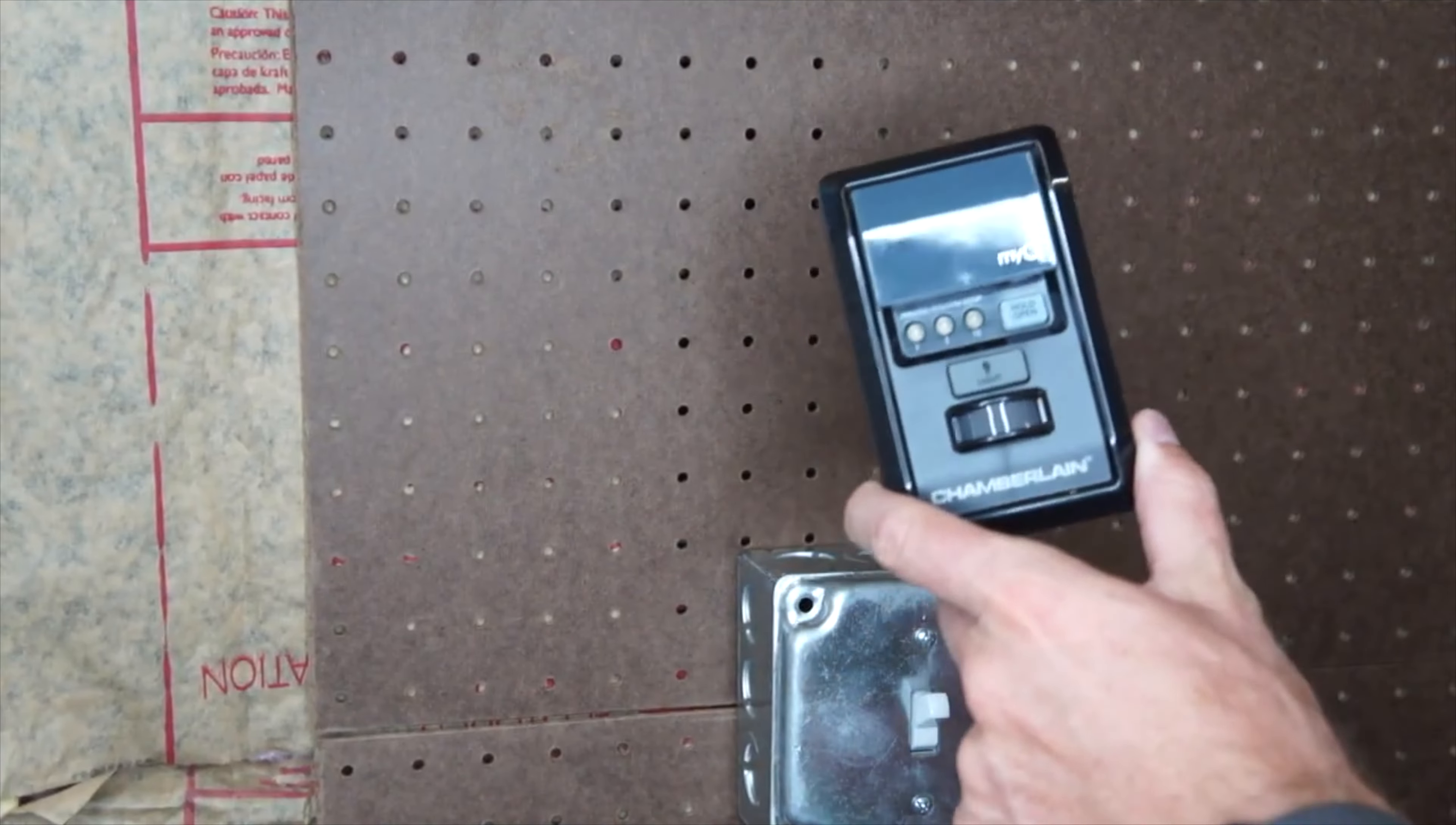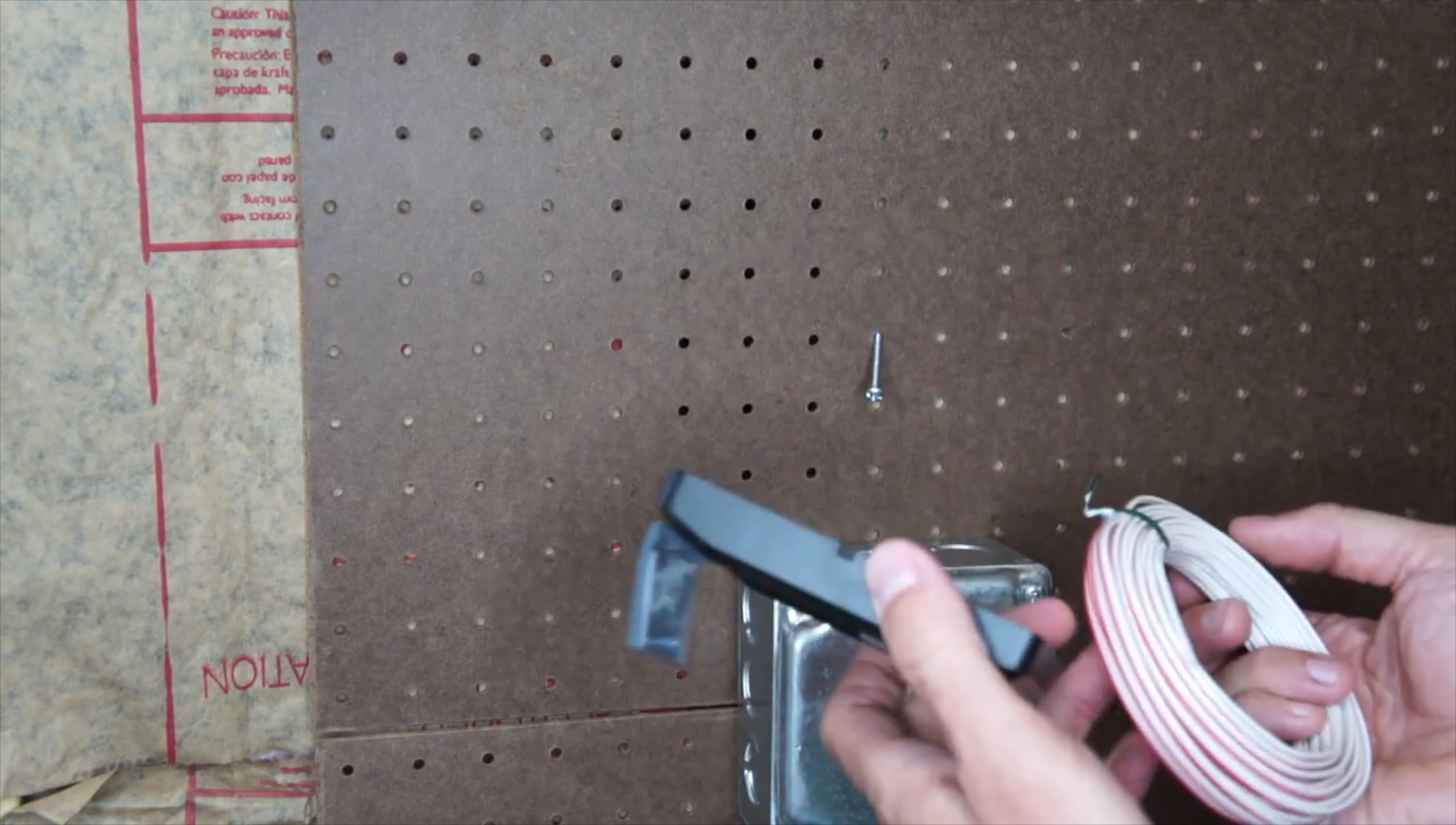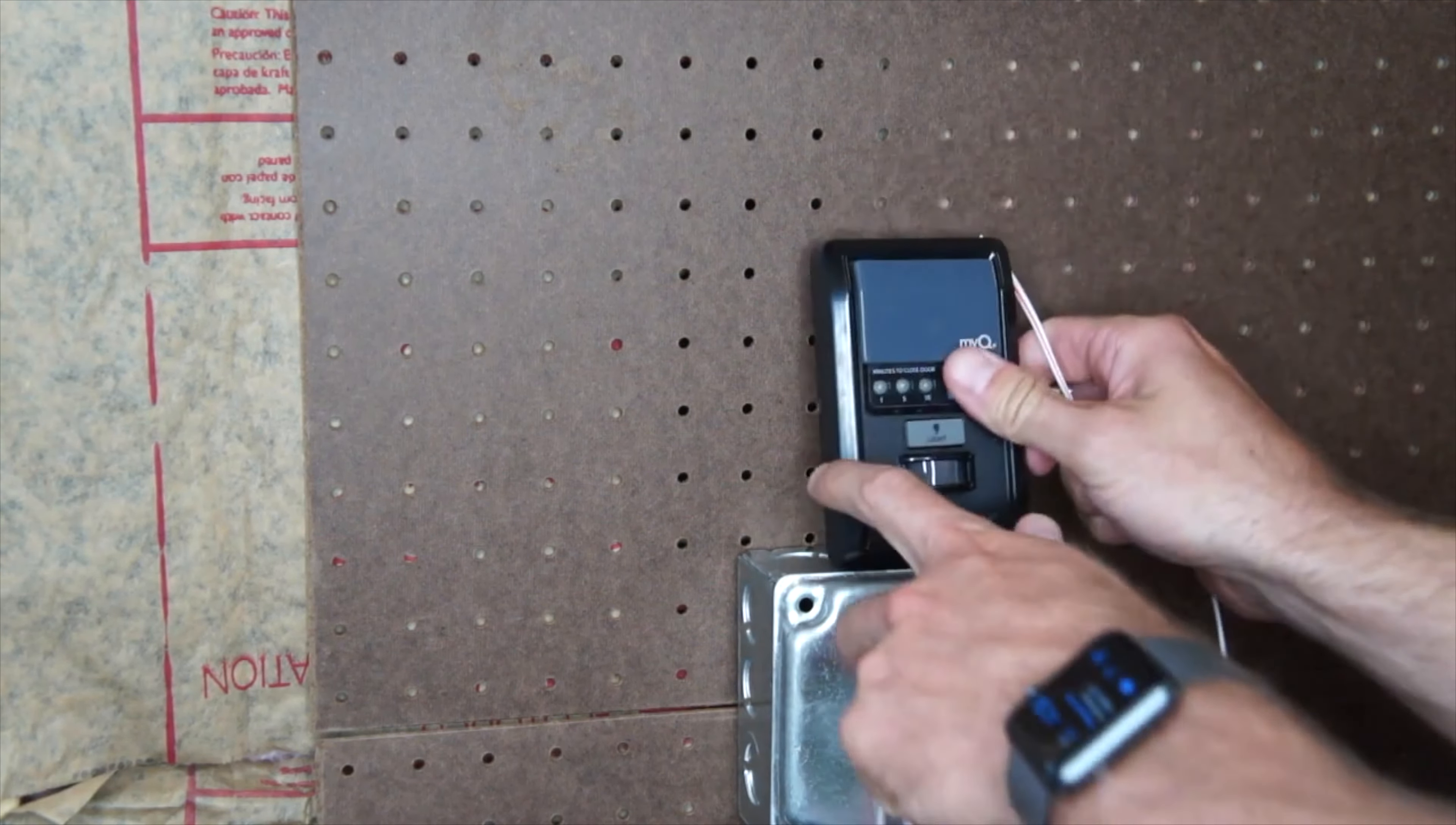Next, we're going to install the button. There's a little more to this than a normal button. There's a way to program leaving the door up for a certain amount of time and whatnot. And there's a motion sensor to turn the light on. First thing, you've got to strip these wires and attach them back here. They're labeled red and white on the back of the button. And then I'll be mounting it right here. So I'm going to strip the wires real quick.